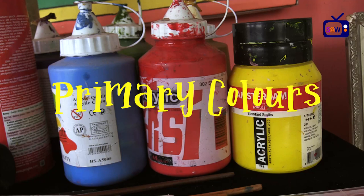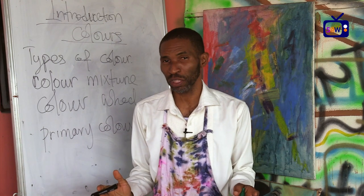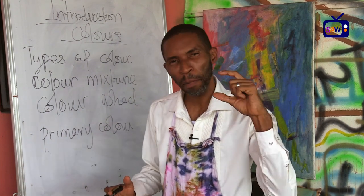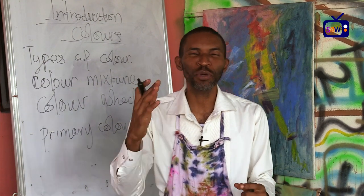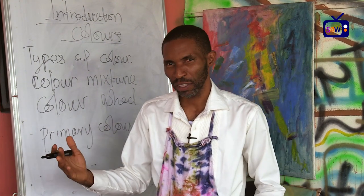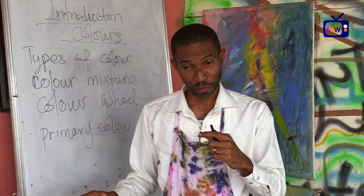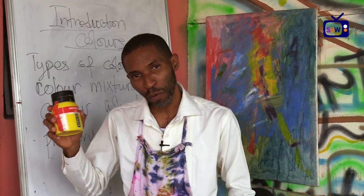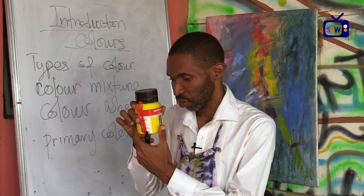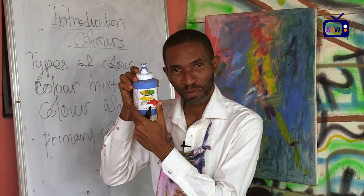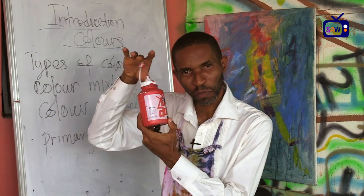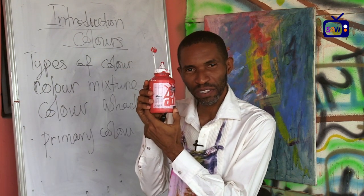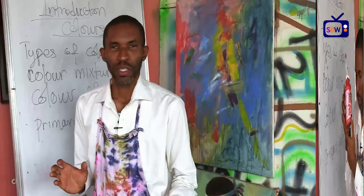First of all, we're going to look at the primary colors. The primary colors are one type of color. We call them the basic colors. Why are they the basic colors? Because they produce other colors. The primary colors are yellow, blue, and red. These are the primary colors, known as the basic colors.